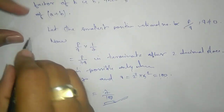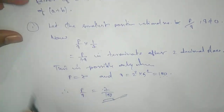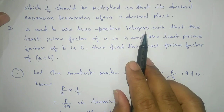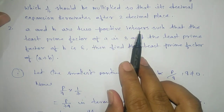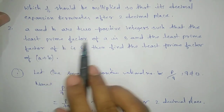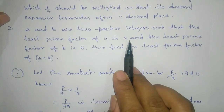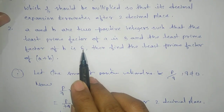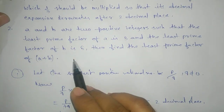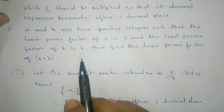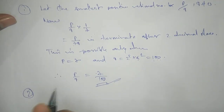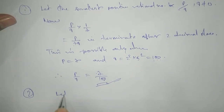Now we will proceed to the second question. Here, a and b are two positive integers — remember, positive integers — such that the least prime factor of a is 3 and the least prime factor of b is 5. Find the least prime factor of a plus b. The answer is 2. Let's see why.